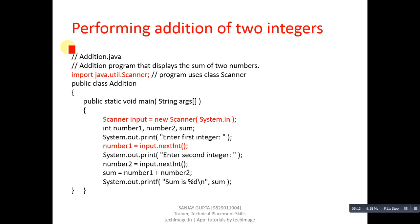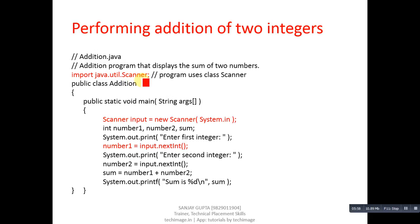After the simple program, here is another program where we interact with the console to read values from the user — performing addition of two integers. The comment says addition.java, meaning we save this program as addition.java. In C and C++ we include header files; in Java these are known as packages. We use the 'import' command, similar to #include. The main package is Java, the sub-package is util, and Scanner is the class name.